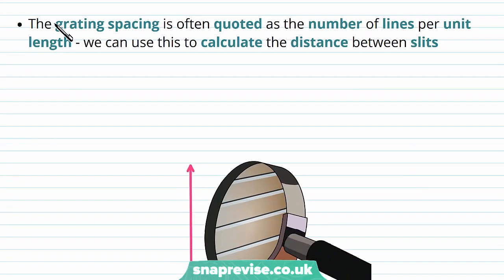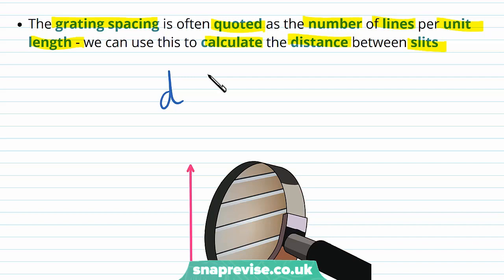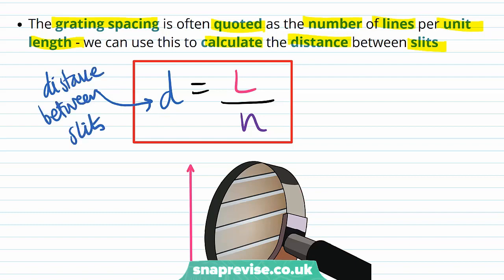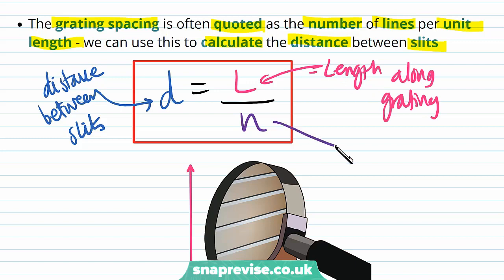The grating spacing is often quoted as the number of lines per unit length, and we can use this to calculate the distance between the slits. The distance between the slits, D, is equal to the length along the grating, L, divided by the total number of lines or slits, N. So D equals L divided by N.